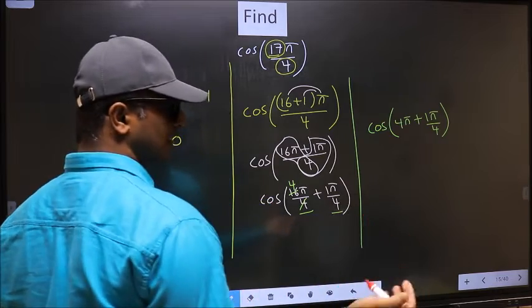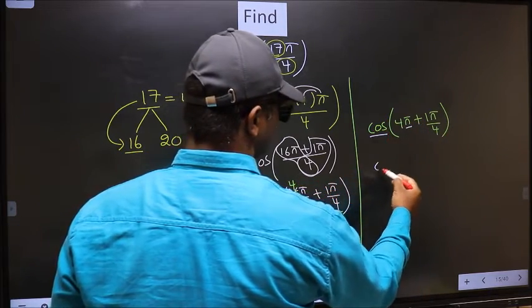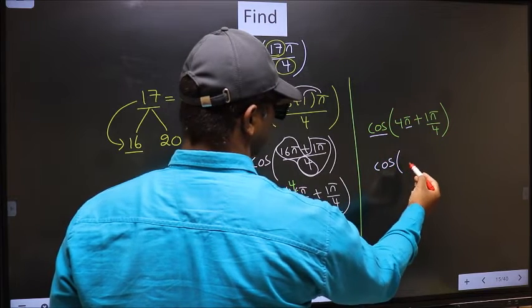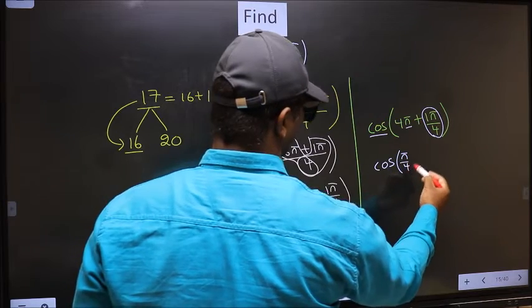Next. Here we have pi. So cos is not going to change, it will remain cos. And inside, we get this angle, pi by 4.